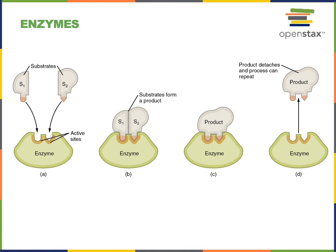An enzyme has an active site where the reagents will bind to the enzyme. These reagents are known as substrates, and the substrates will be converted into products as the chemical reaction proceeds.